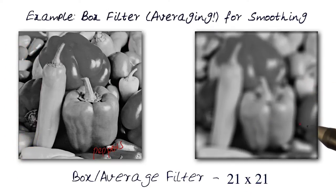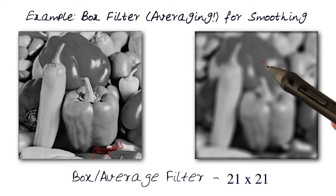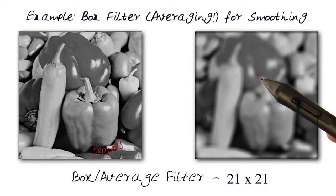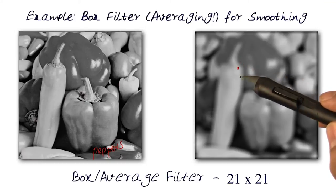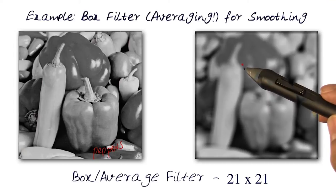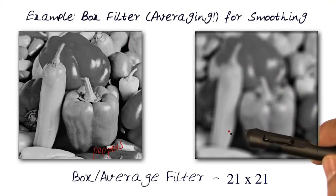This is the output of that process. Basically, if you notice, the whole image is quite blurry. What has happened really is, at each and every point, we've basically replaced the value by the average of the neighborhood in a 21 by 21 neighborhood. Now, all of a sudden, if you notice, all the sharp edges are gone.